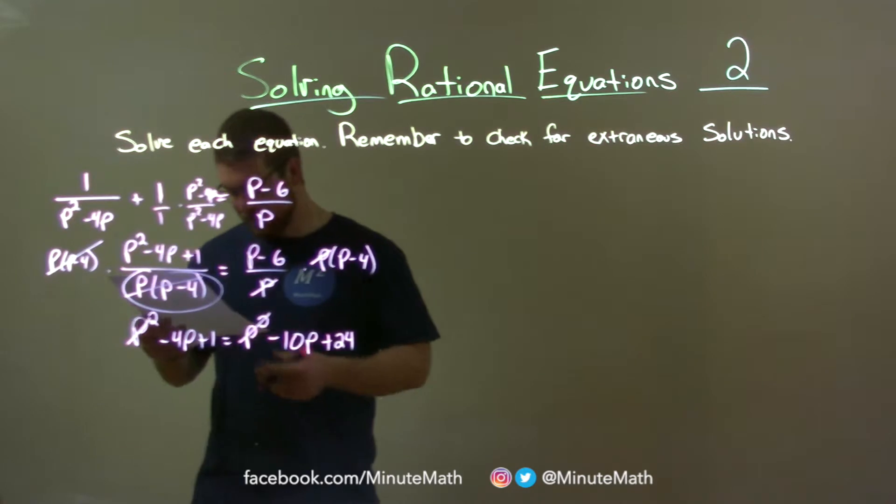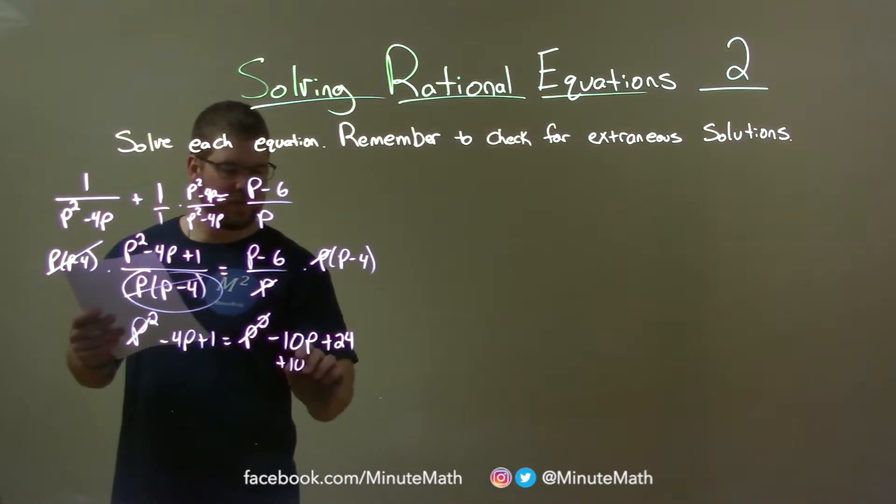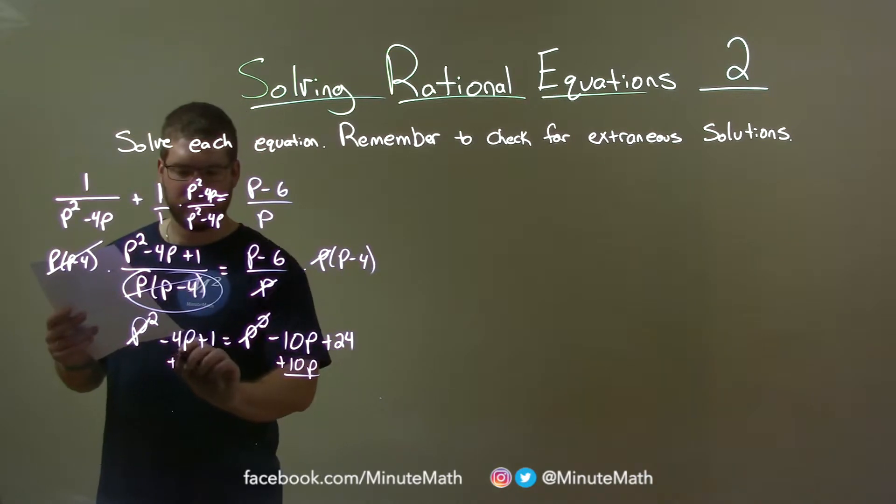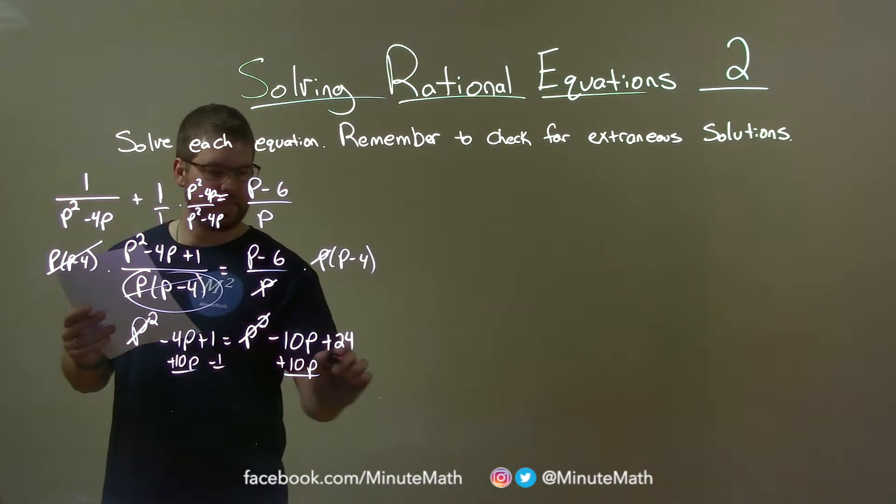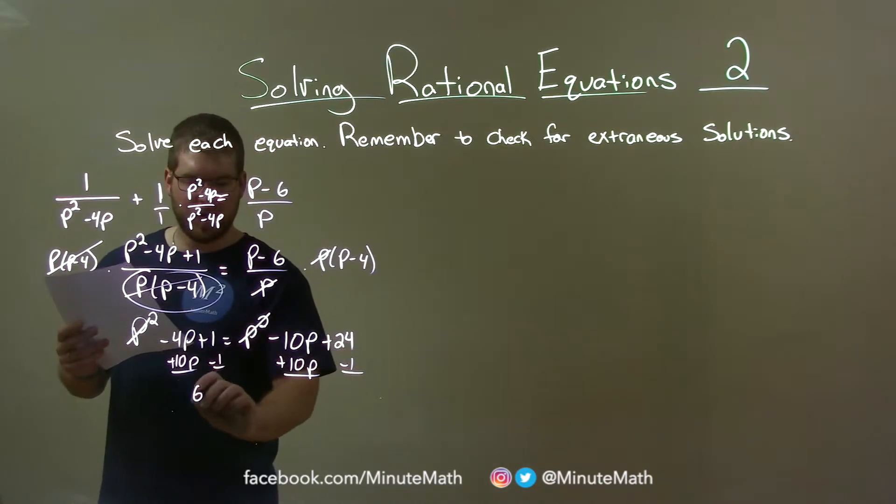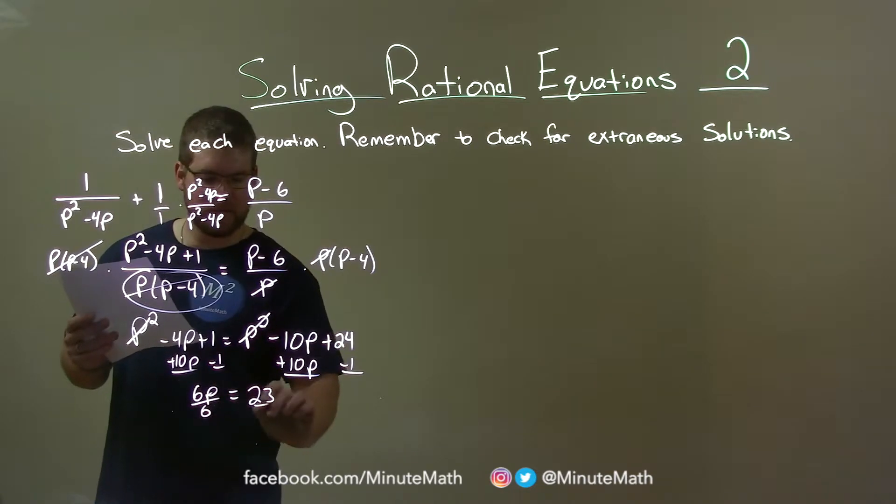Let's bring our 10p to the left here. That's what I did first. Add 10p to both sides. And I'm actually going to bring my 1 over to the right. Minus 1, minus 1. We now have a positive 6p equals a 23 divided by 6. And p equals 23 divided by 6.